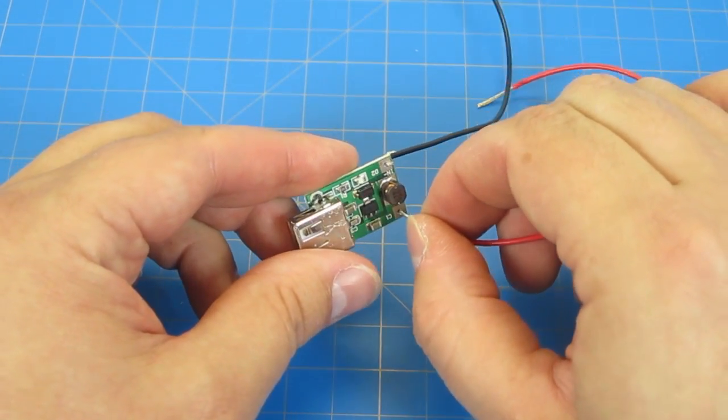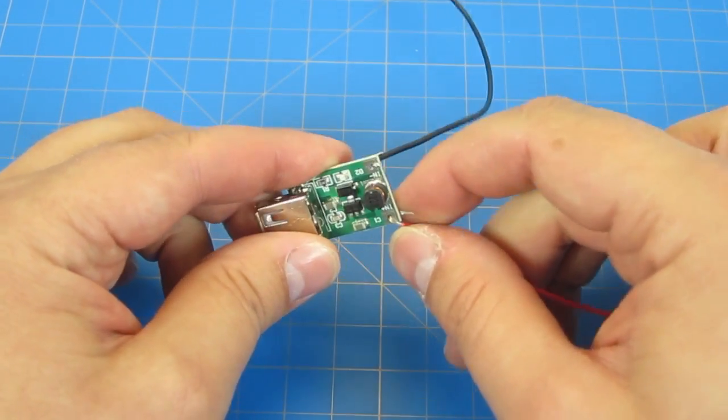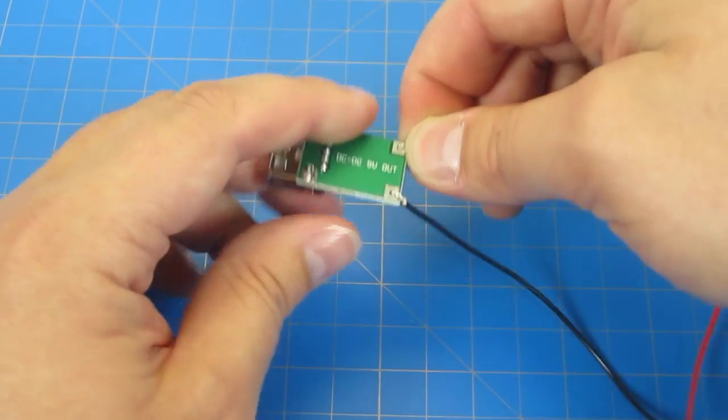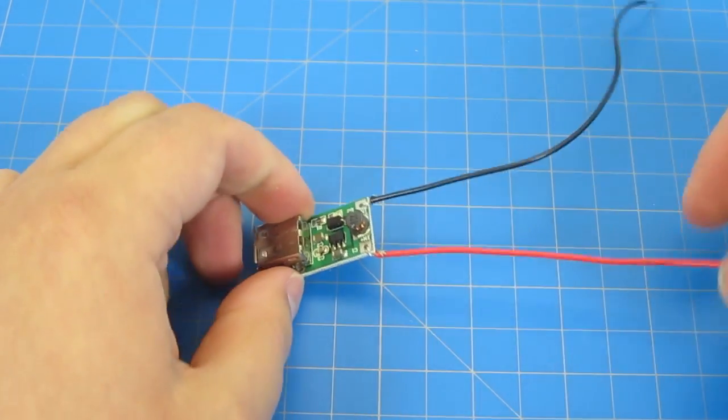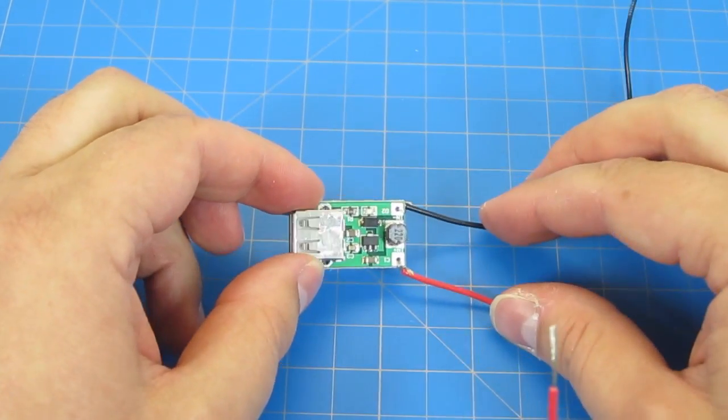Grab one red wire and one black wire. Twist the ends so they're a little bit more firm. Then stick them through the appropriate ends on the USB circuit. Twist them into place like so. They should be nice and secure.